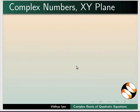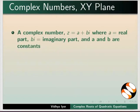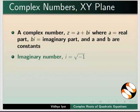Complex numbers xy-plane. As we know, a complex number is expressed as z equals a plus bi. a is the real part, bi is imaginary part, a and b are constants. i is imaginary number and is equal to square root of minus 1.